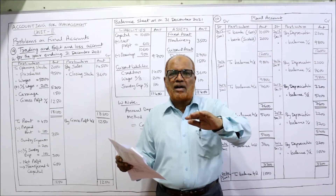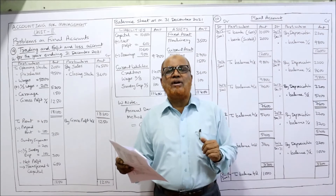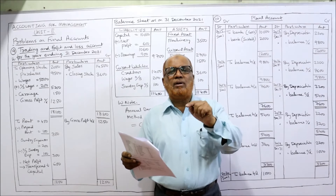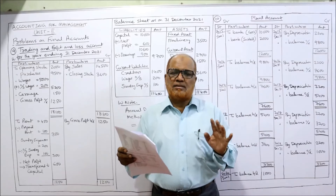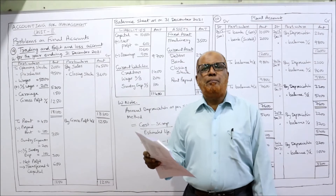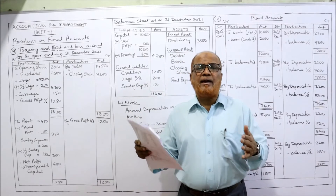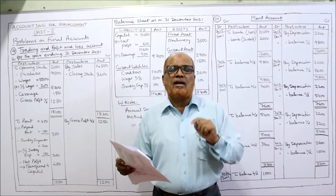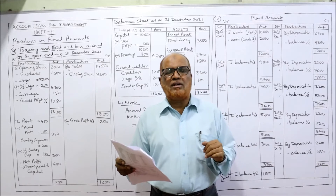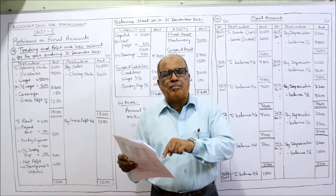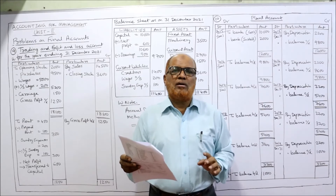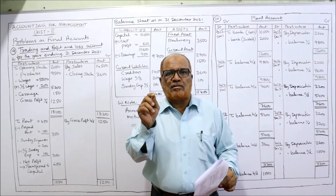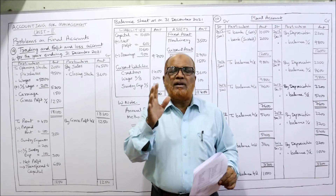Third, sundry expenses outstanding: just like wages outstanding, add the sundry expenses outstanding to sundry expenses in the profit and loss account. Fourth, rent prepaid means paid in advance, so deduct this prepaid rent from rent on the debit side of the profit and loss account, and show the prepaid rent as a current asset. Make a note of all this — writing it down will help you remember.